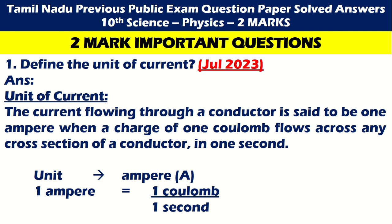Now, two marks — 14 important questions we will solve with detailed explanation in this video. First one: Define the unit of current. The current flowing through a conductor is said to be 1 Ampere when a charge of one Coulomb flows across any cross section of a conductor in one second.